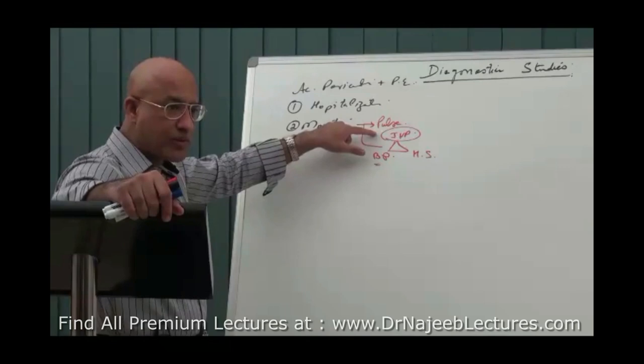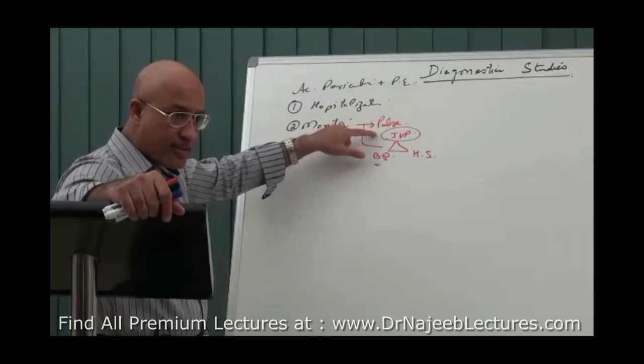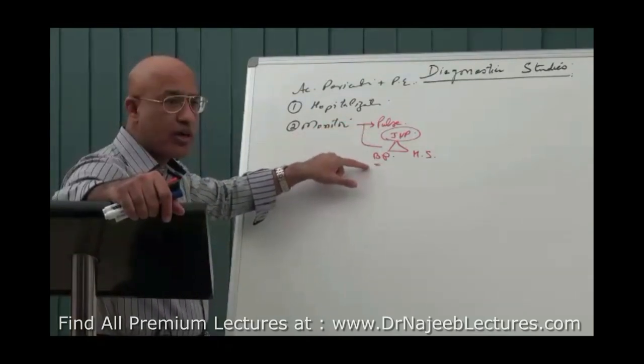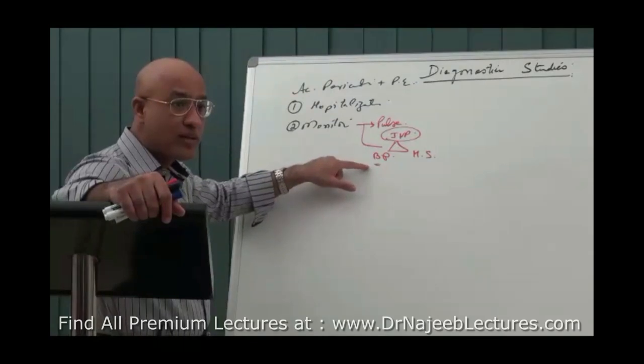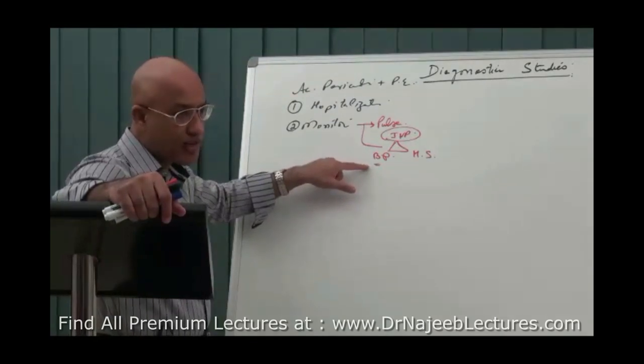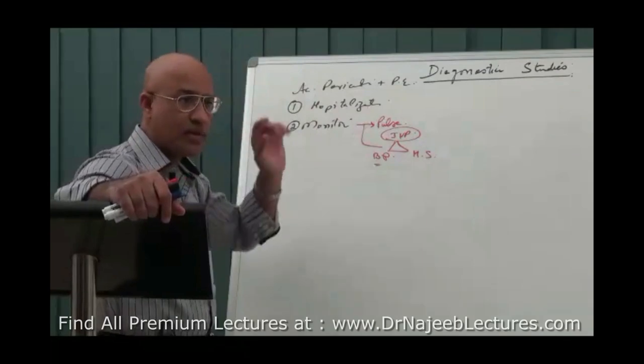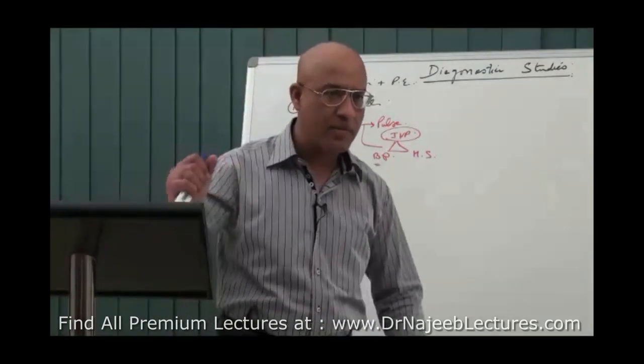There should not be rising JVP with loss of Y descent and there should not be falling blood pressure with pulsus paradoxus. If these things start appearing, the tamponade is there.